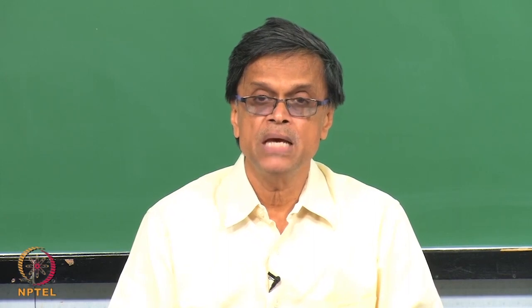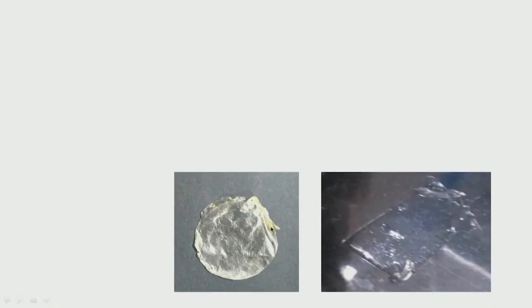We will continue on the topic of hydrogels, which I introduced in the previous class. Hydrogels, as the name implies, are jelly-type polymeric materials. They could be natural or synthetic, and they absorb a lot of water — that is why they are called hydrogels. As shown in this picture, it starts as a dry polymeric material, but when it takes up water, it swells a lot.